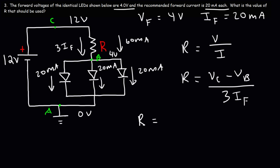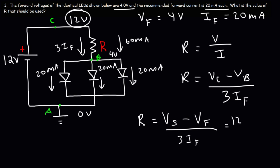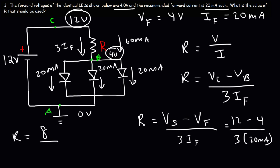We can replace VC with VS — the battery or source voltage — and VB with VF, the forward voltage of the identical LEDs, then divide by three times the forward current. So it's 12 volts minus 4 volts, divided by three times 20 milliamps. 12 minus 4 is 8. Three times 20 is 60 milliamps, and 60 divided by 1,000 is 0.06 amps. So 8 volts divided by 0.06 amps gives us a resistor value of 133 ohms.